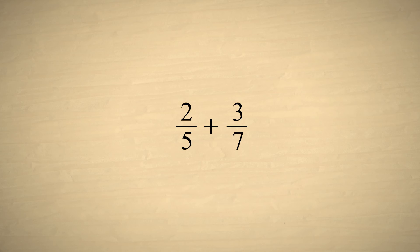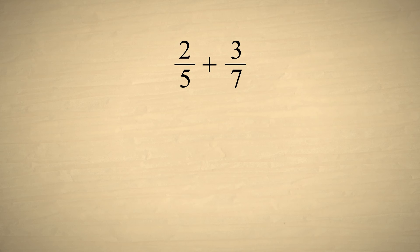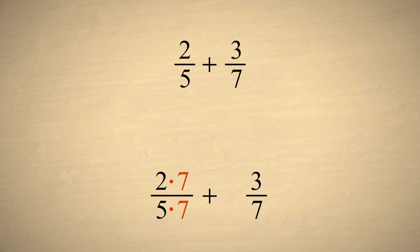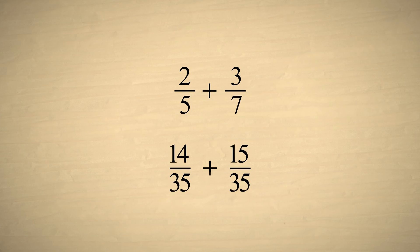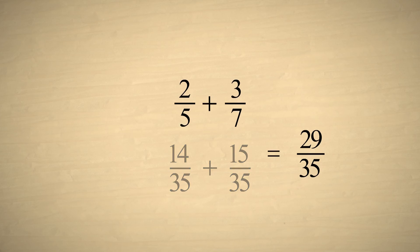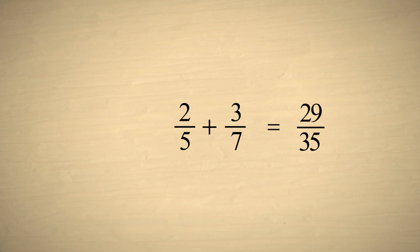Let's try another example: adding the fractions two-fifths and three-sevenths. To create the common denominator, we multiply the numerator and denominator of the fraction two-fifths by the denominator of three-sevenths. And we multiply the numerator and denominator of three-sevenths by the denominator of two-fifths. This gives us fourteen-thirty-fifths plus fifteen-thirty-fifths, and fourteen-thirty-fifths plus fifteen-thirty-fifths is twenty-nine-thirty-fifths. So two-fifths plus three-sevenths is twenty-nine-thirty-fifths.